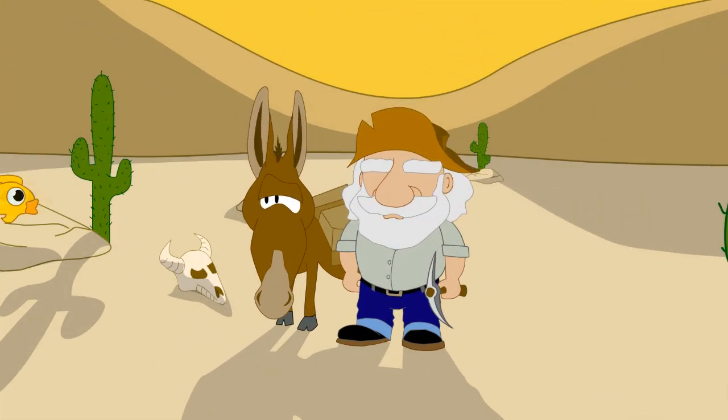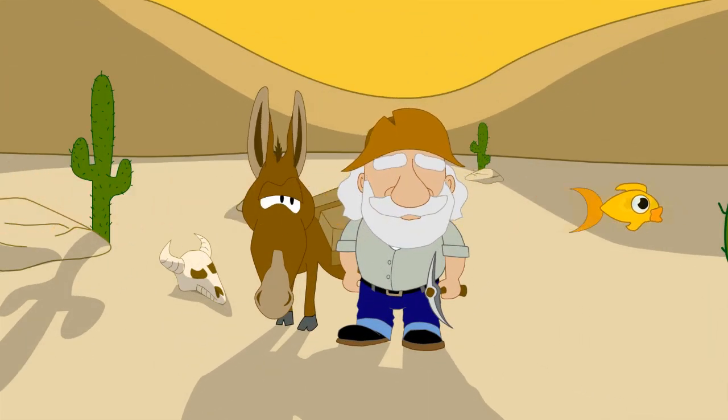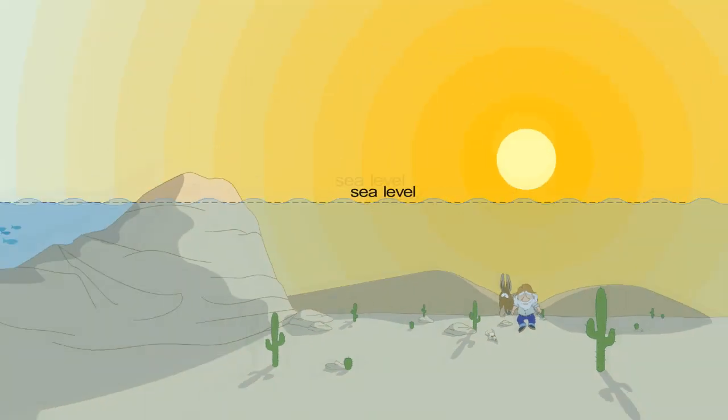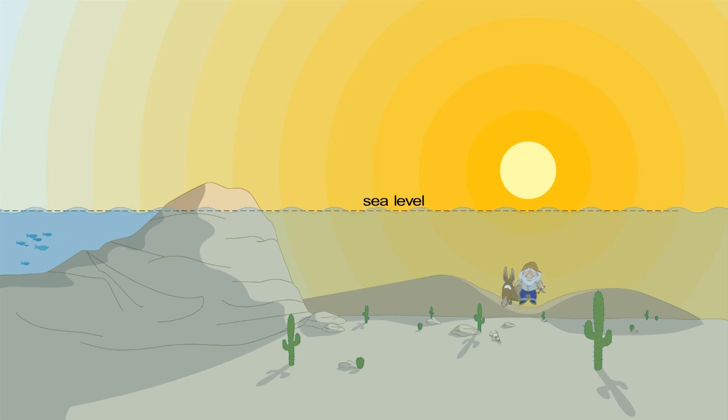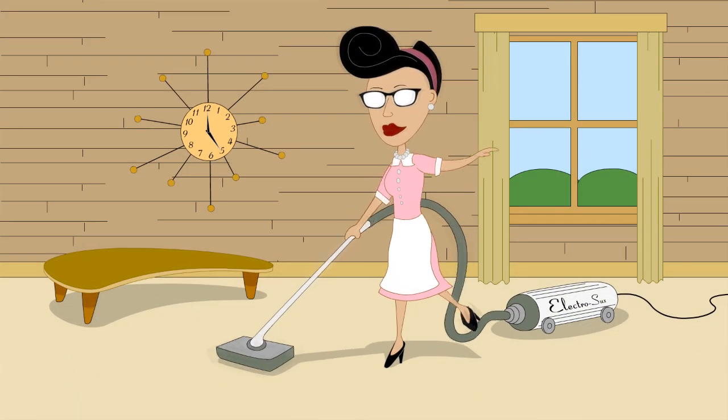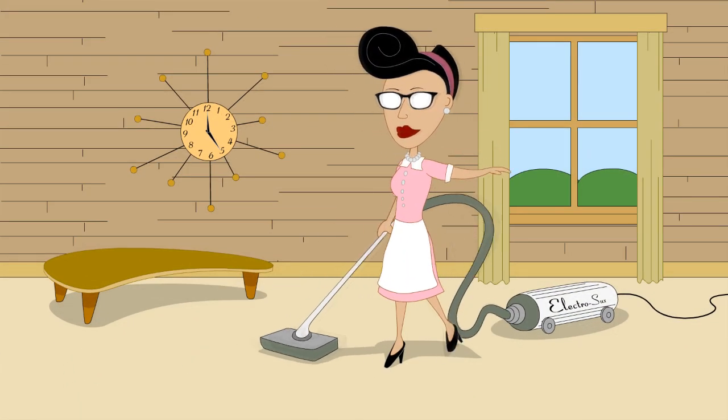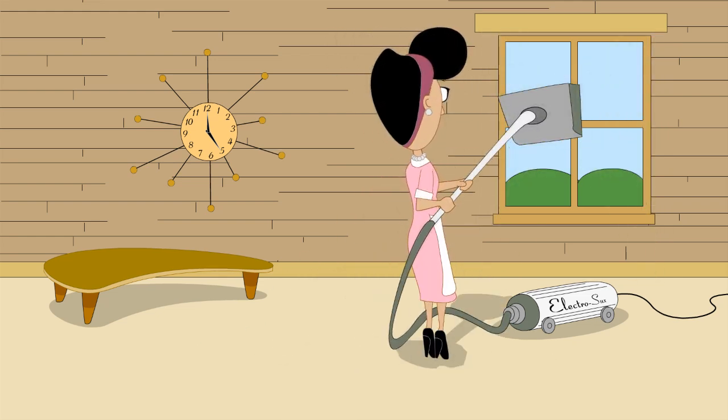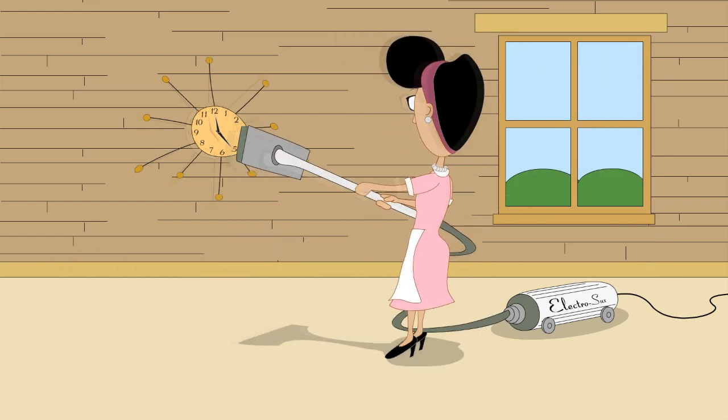Death Valley is below sea level. So the altitude of Death Valley could be thought of as a negative altitude. A vacuum cleaner creates an air pressure which is less than atmospheric pressure. So it can be thought of as creating a negative pressure.